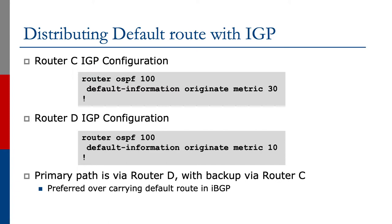The example on the slide shows how to originate the default route on the two border routers with different metrics. Remember, in OSPF the lowest metric will win. Traffic would default out to router D unless we had more specific paths out through router C. So on router C we originated the default route in OSPF with a high metric — 30 in the example — and on router D with a low metric, 10, making router D the primary default route with router C as backup.